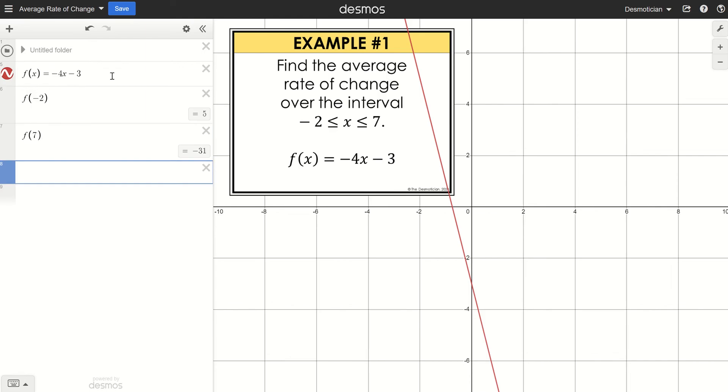So essentially what we're going to do is the slope formula: f(7) subtract f(-2) over those two endpoints, 7 subtract -2. And I've used lots of parentheses here to help you see it easier.